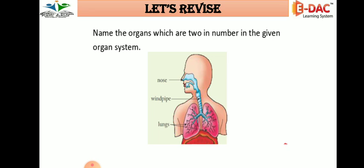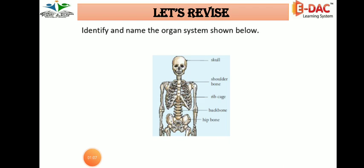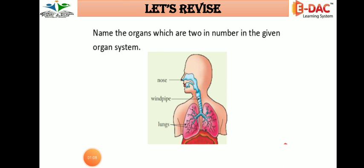Now, name the organ which has two in number in the given image of the given system. First of all, tell me which system this is. Which system is this? It is the breathing system. I'll give you a hint — breathing system.